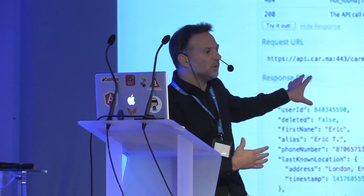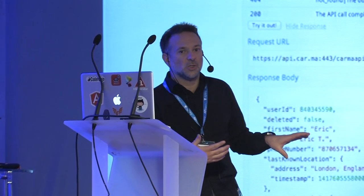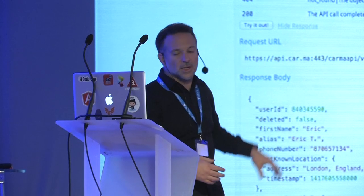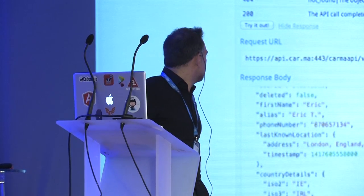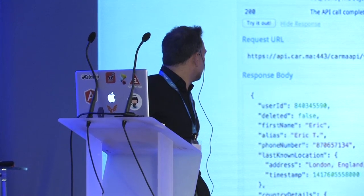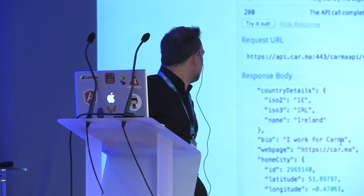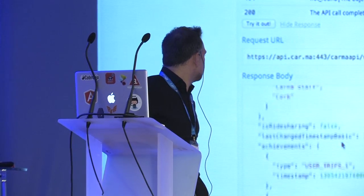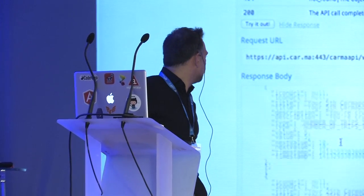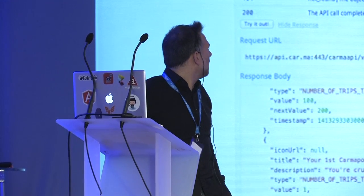As soon as you get an authentication token from us, you can log in and call APIs. Here is my name, my last known address — I had entered a dummy location in London, I actually live in Ireland — I work for Karma, and some achievements I've reached like carpooling a few times. This is all direct live calls on the API.